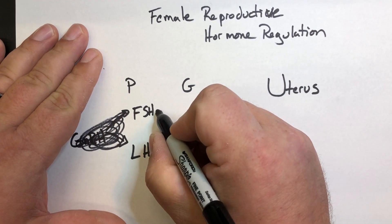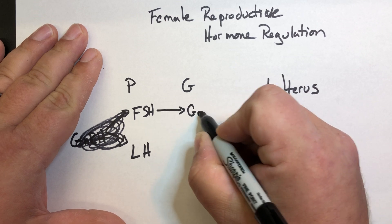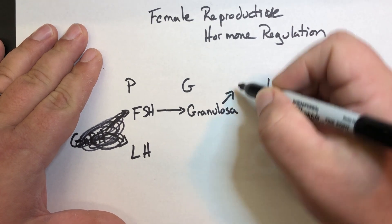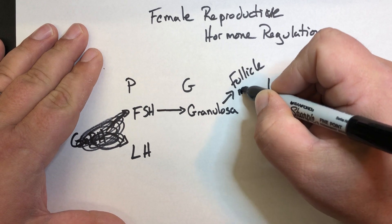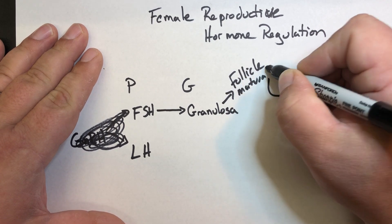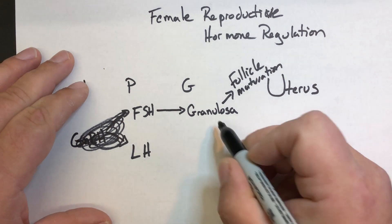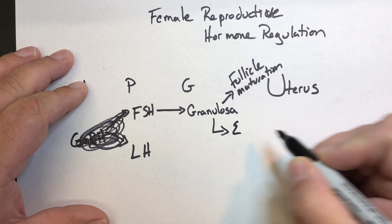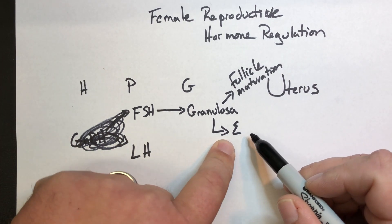Specific target. FSH targets the granulosa of the follicle. And as it does, that leads to follicle maturation. And this is where follicle maturation goes hand in hand with estrogen production. The granulosa, when they're stimulated by FSH, produce estrogen.